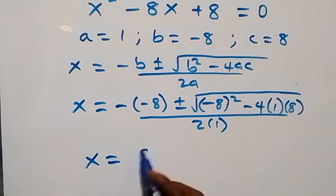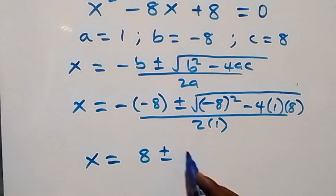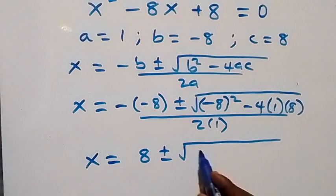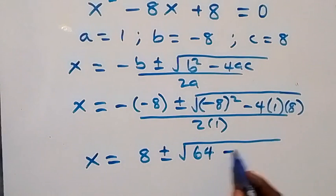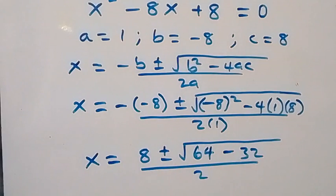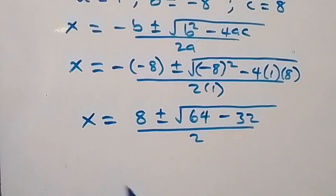Using the quadratic formula, x equals 8 plus or minus the square root of (8 squared minus 4 times 1 times 8), all over 2 times 1. Inside the square root we have 64 minus 32, and this gives us x equals 8 plus or minus square root of 32, all over 2.